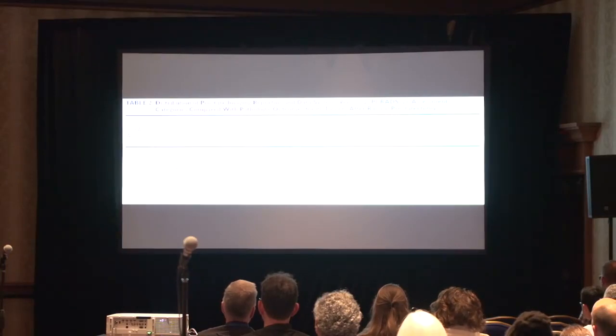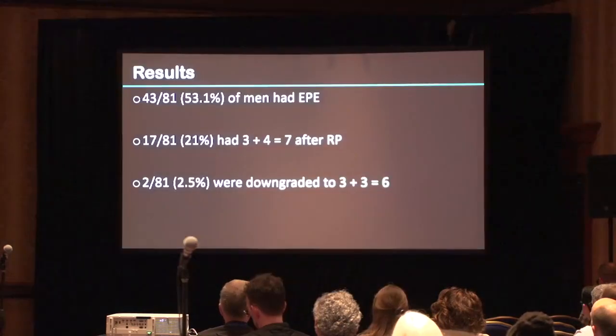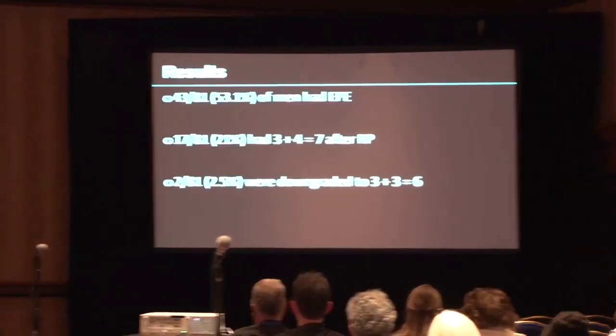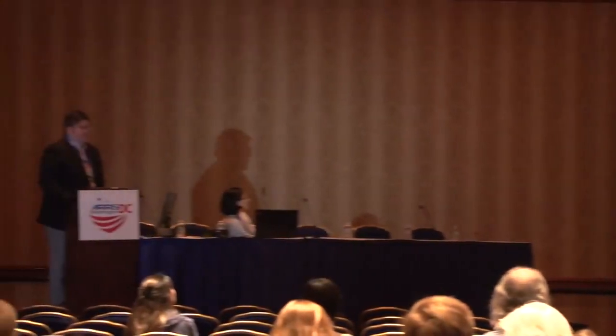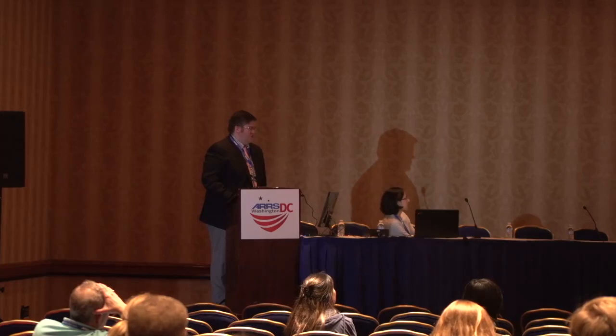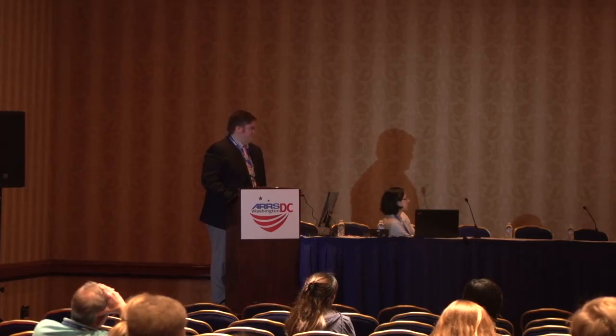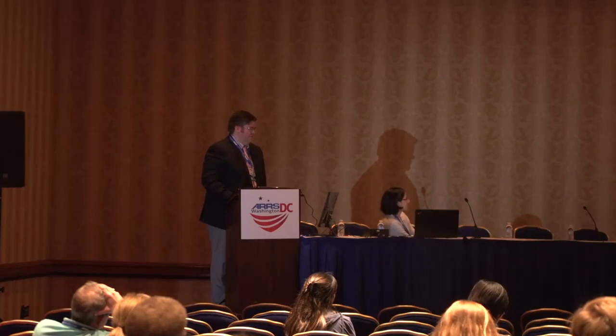Those that had disease extending beyond the prostate also had a higher PI-RADS score. The accuracy was very good. Of the final results, 43 of the 81 patients had EPE, 17 of 81 had 3 plus 4 equals 7 after prostatectomy, and 2 of the 81 were actually downgraded to a 3 plus 3 equals 6 Gleason score.